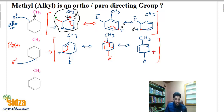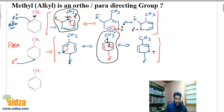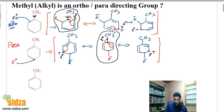When the electrophile attacks on the para position, you again see one intermediate where the positively charged carbon is attached directly to the methyl group — a tertiary carbocation — and the other two are secondary carbocations. So comparing ortho and para attacks, both give two secondary carbocations and one tertiary carbocation among their resonating structures, and they are almost the same in terms of stability.